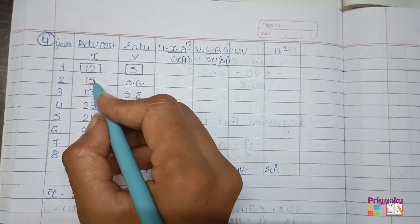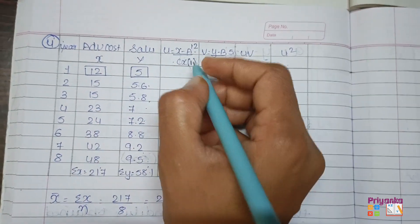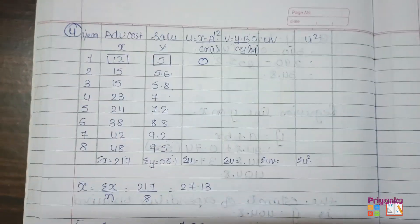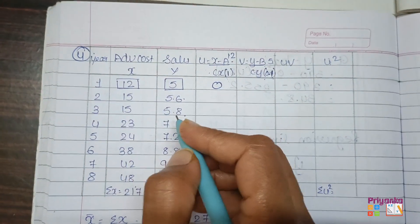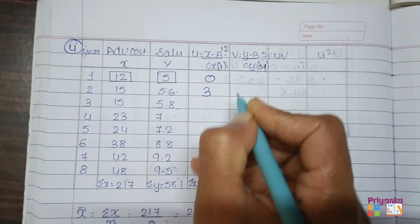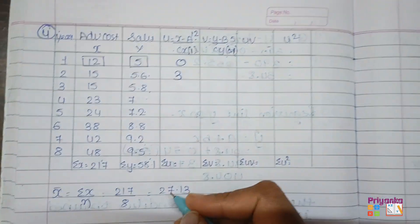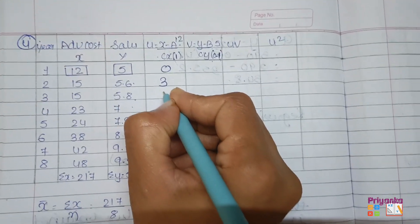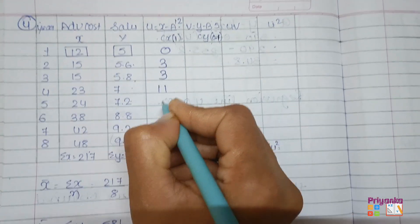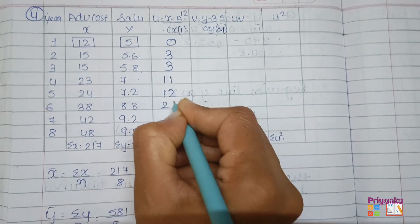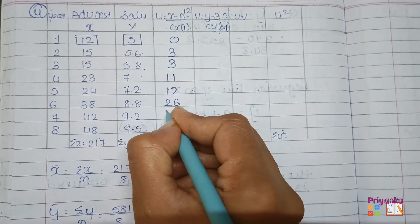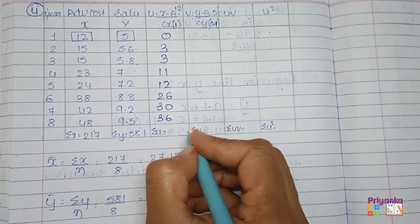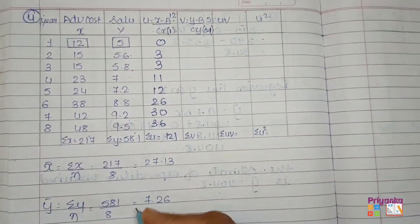For U: X minus assumed mean divided by CX. That is 12 minus 12 divided by 1 equals 0. Then 15 minus 12 divided by 1 equals 3. This is how I have already explained you — just continue with your calculation on your calculator. The total of the U column is 121.